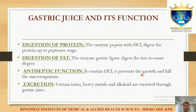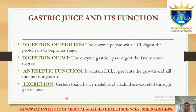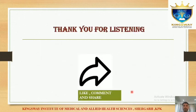Functions of gastric juice: pepsin digests proteins; gastric lipase digests fats; HCl provides an antiseptic function; and it also assists in excretion of toxins, metals, and alkaloids. Thank you for listening. That was our chapter for today. If you liked the video, please like it, comment, and share it with your friends.